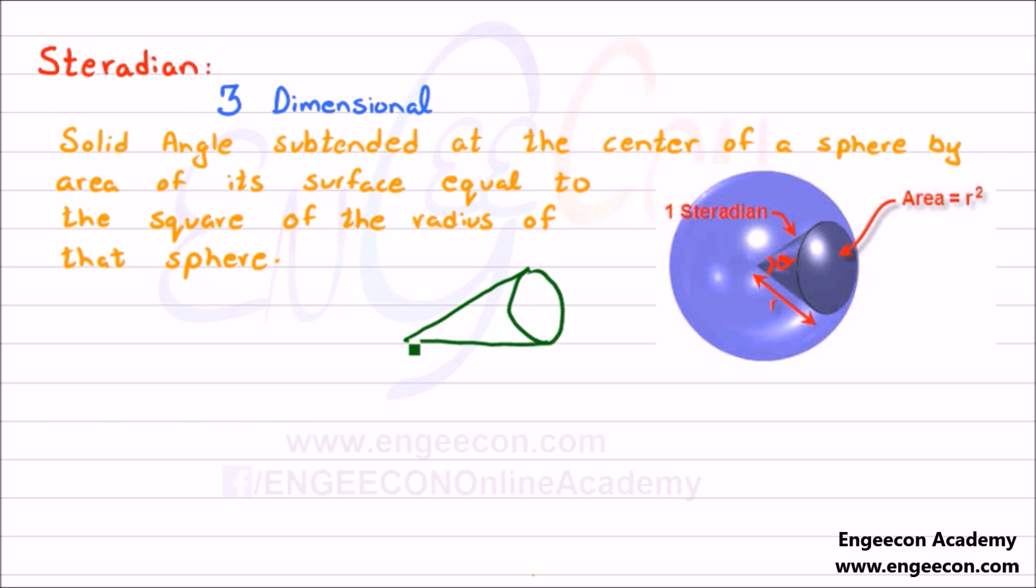If we consider it as a center of a sphere and this distance as r, the radius of the sphere, and if this area is equal to r², then this angle is equal to 1 steradian.